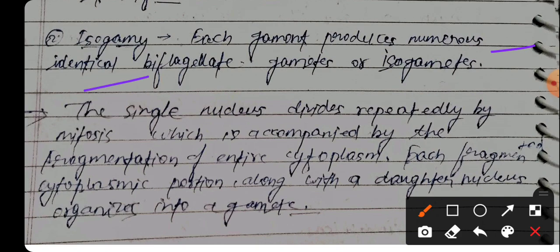Each gamont produces a number of identical biflagellate gametes, which are isogametes. The single nucleus divides repeatedly by mitosis, accomplished by fragmentation of the cytoplasm, with each cytoplasmic portion containing a daughter nucleus.